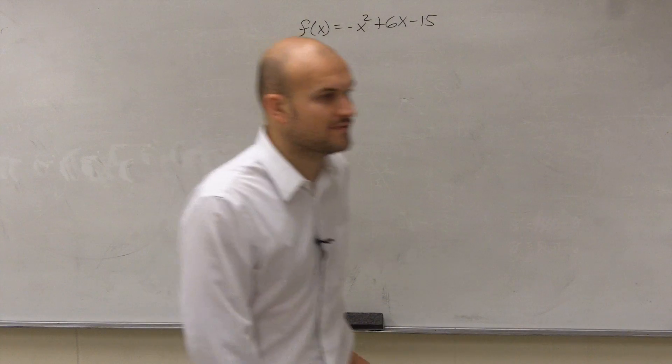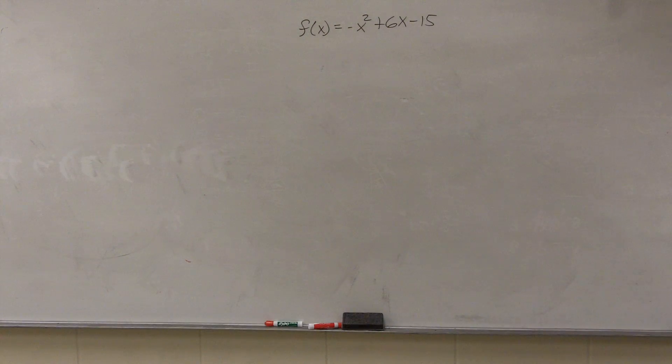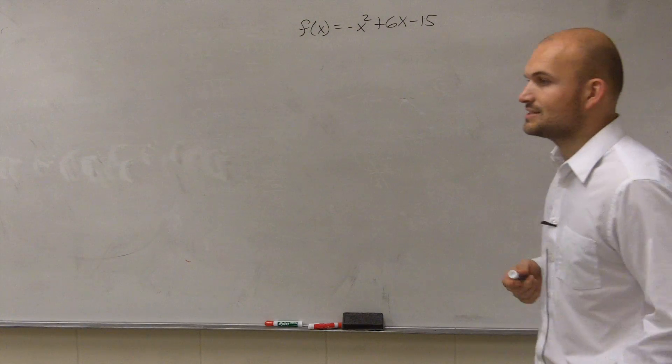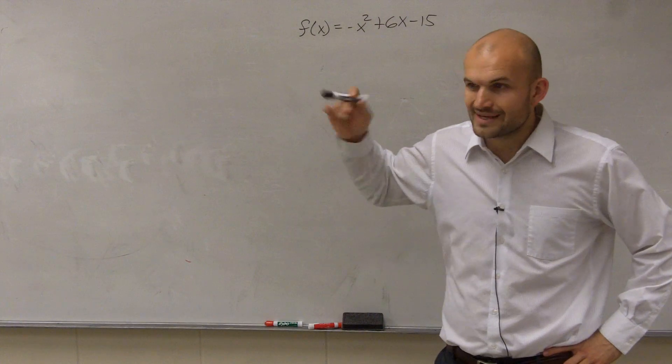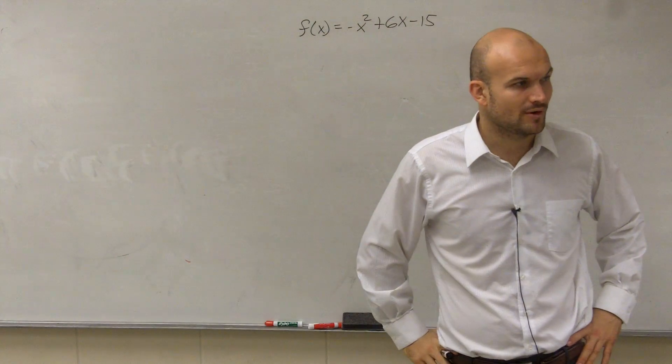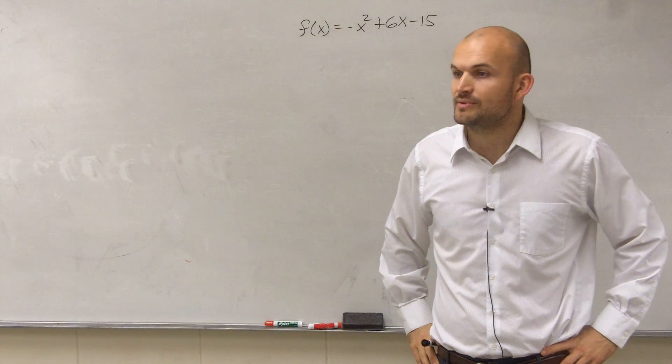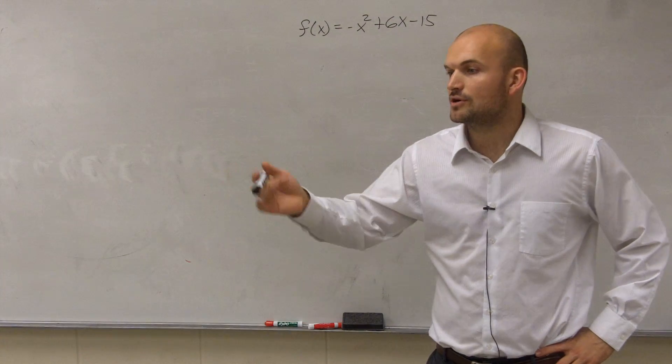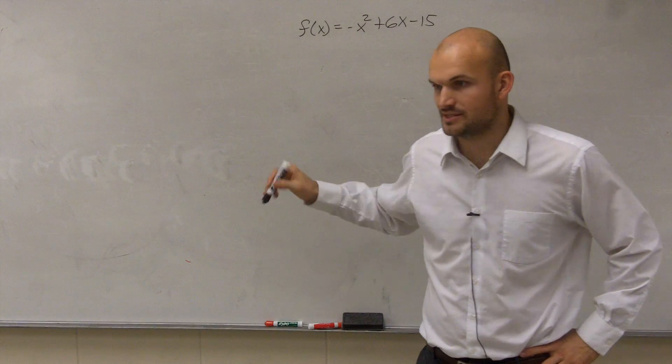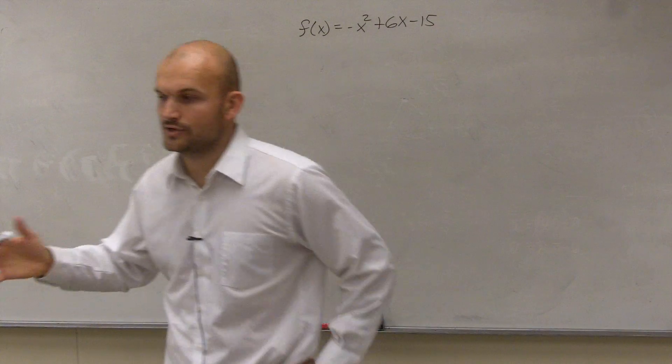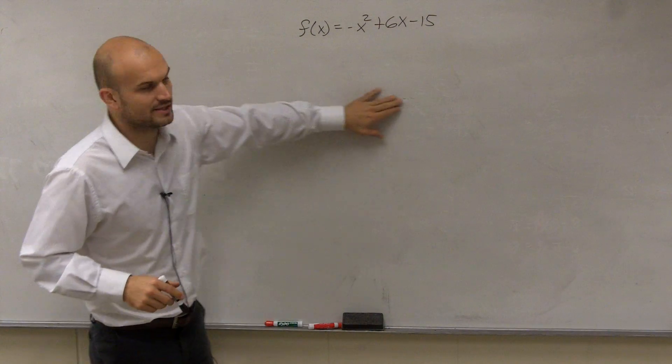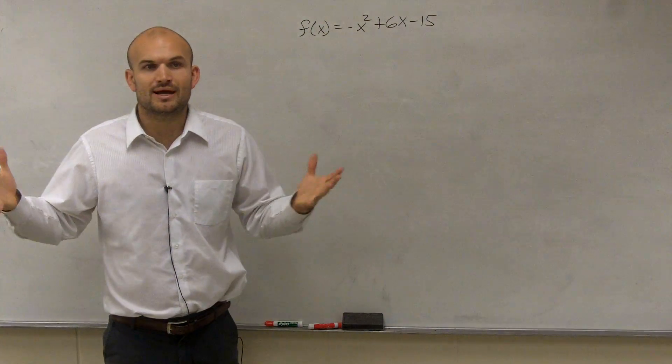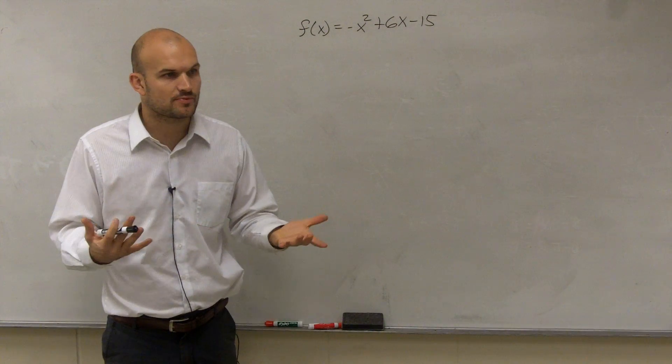So, the question asks, they give us a function, f of x equals negative x squared plus 6x minus 15. And what they ask us to do for this problem is to find the maximum and the minimum point, and then also determine the domain and the range. So, if you didn't write this down, Alex, you're probably going to want to write this down on a sheet of paper. So, the first thing we look at this, ladies and gentlemen, is, remember, we've got to talk about what do quadratics produce.